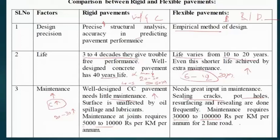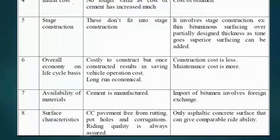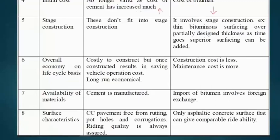Initial cost is more in the case of rigid pavement, while flexible pavement has a relatively reasonable construction cost. The higher initial cost of rigid pavement is due not only to material cost but also quality control, design costs, material transport, and construction equipment — all of these contribute to the higher construction cost of rigid pavement.